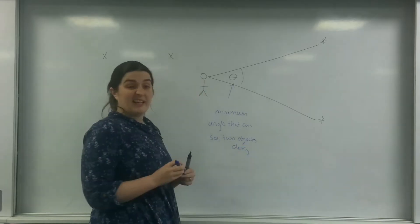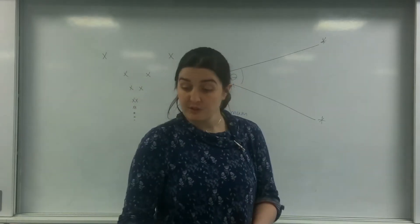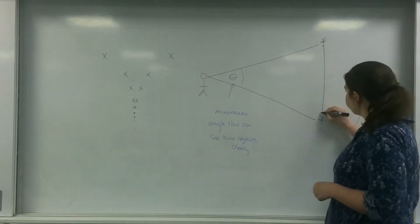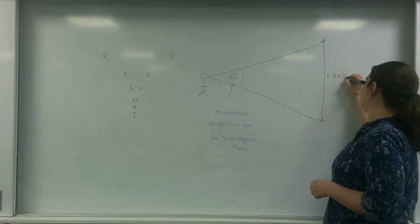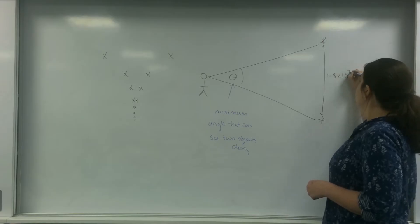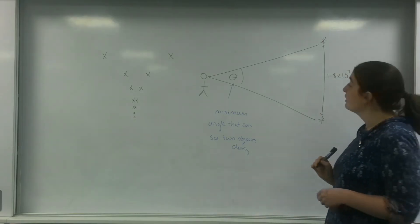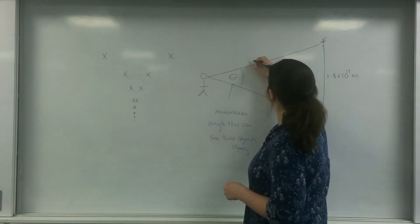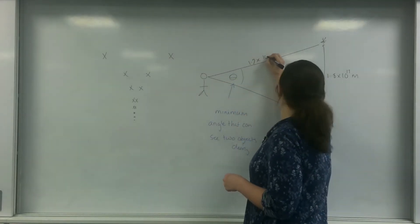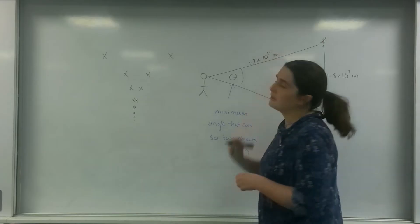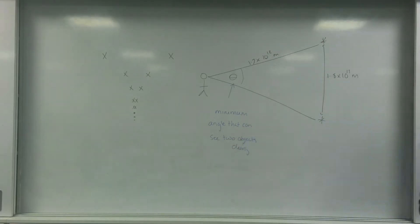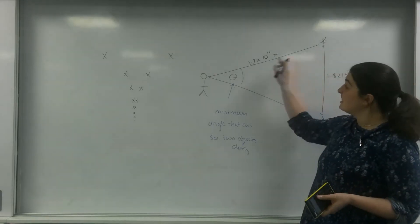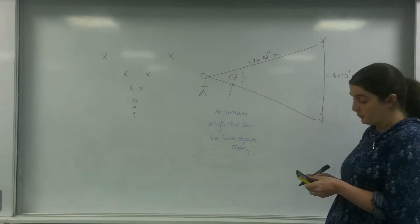You can calculate that using many methods. So if I knew that they were 1.8 times 10 to the 12 metres apart, and I know the distance to them was 1.7 times 10 to the 17 metres, I can use arc length because this is an arc length, this is a radius — a small sector of the circle.